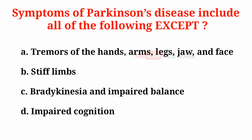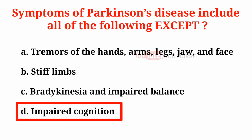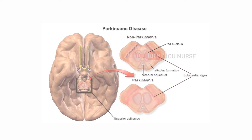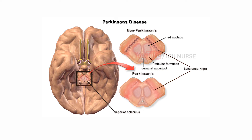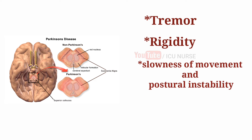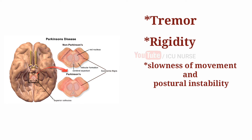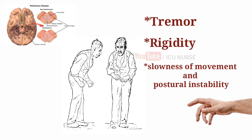Symptoms of Parkinson's disease include all of the following except: A. Tremors of the hand, arms, legs, jaw and face, B. Stiff limbs, C. Bradykinesia and impaired balance, D. Impaired cognition. The correct answer is D. Impaired cognition. The four characteristic symptoms of Parkinson's disease are tremor, rigidity, slowness of movement, and postural instability. Tremor is generally most apparent at rest or when the patient is stressed, and improves with deliberate movement.